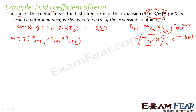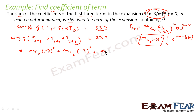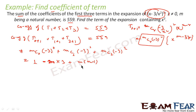We use T(r+1) because we know that formula. For r=0: mC0 times (-3)^0. For r=1: mC1 times (-3)^1. For r=2: mC2 times (-3)^2. So mC0 is 1, (-3)^0 is 1. mC1 is m, and (-3)^1 is -3, giving -3m. mC2 times 9 gives us 9·m(m-1)/2.